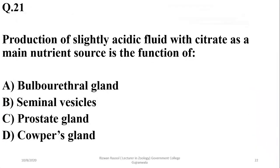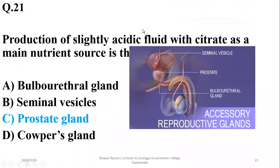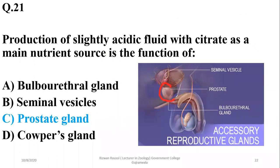Number twenty-one: production of slightly acidic fluid with citrate as the main nutrient source is the function of the prostate gland, which is the single largest gland in the male reproductive system. The other two helping glands are the paired seminal vesicles and bulbo-urethral glands. The secretion of the bulbo-urethral gland is alkaline and used for neutralization of the urethra, which is mostly acidic. The prostate produces citrate and certain other nutrients for the semen, while the seminal vesicles also add nutrients as well as a liquid medium.